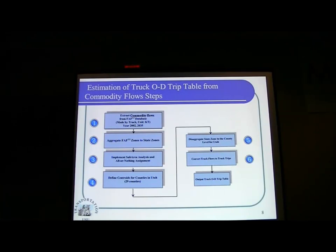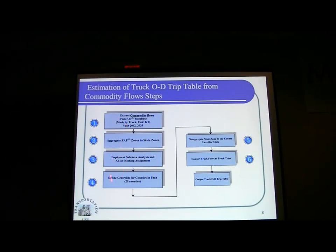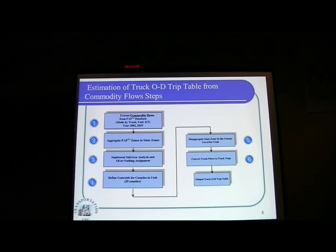So the next question was: what do we need to do? They said we could go purchase the data. Then we asked if there was an open-source option — there was not. So we needed to build everything from scratch. We developed the truck OD trip tables using secondary data sources, specifically traffic counts, and applied a six-step process using freight data to develop the truck demand for Utah.